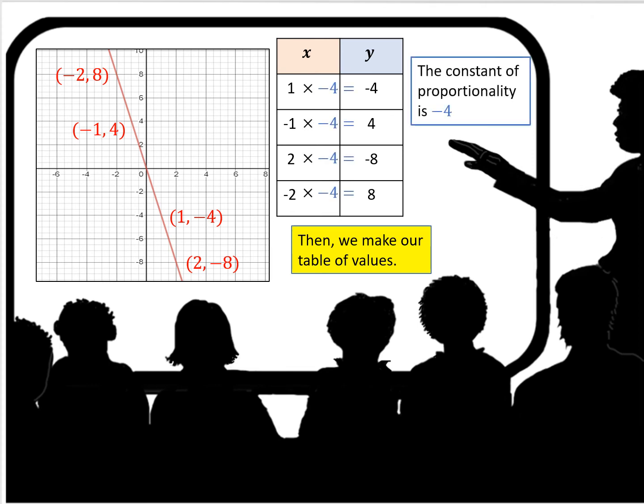Now that we have a table of values, we can easily see that to go from 1 to negative 4 you have to multiply times negative 4. From negative 1 to 4 you multiply by negative 4. From 2 to negative 8 the multiplier is negative 4. And from negative 2 to 8 the multiplier is again negative 4. Remember that a negative times a negative is a positive.